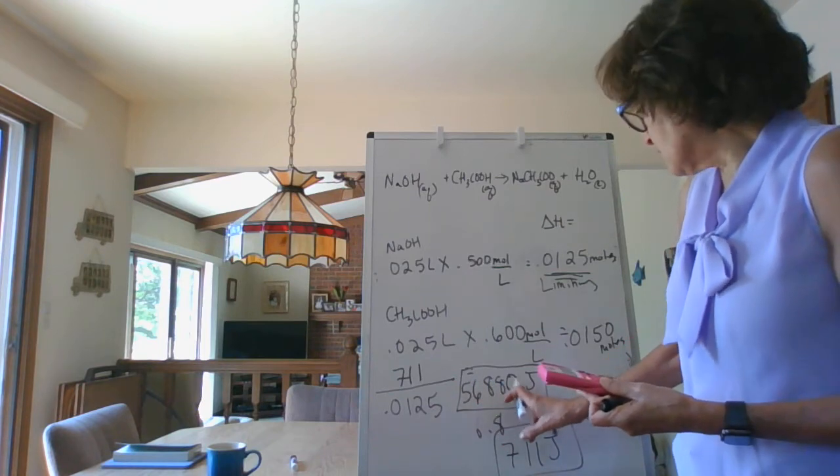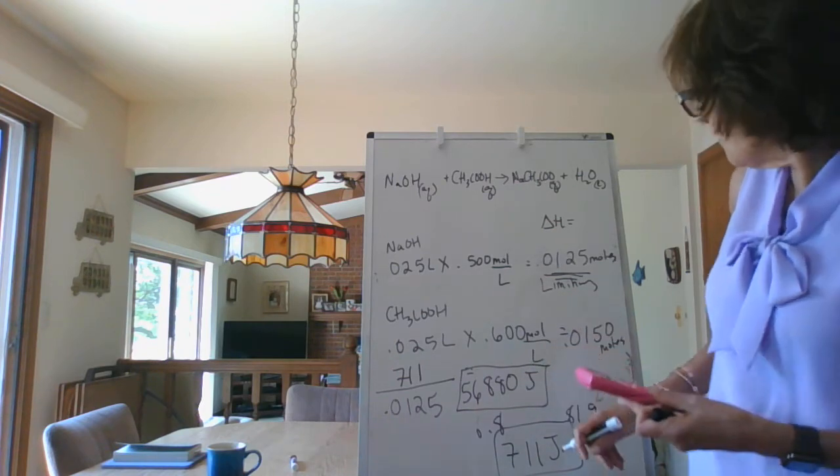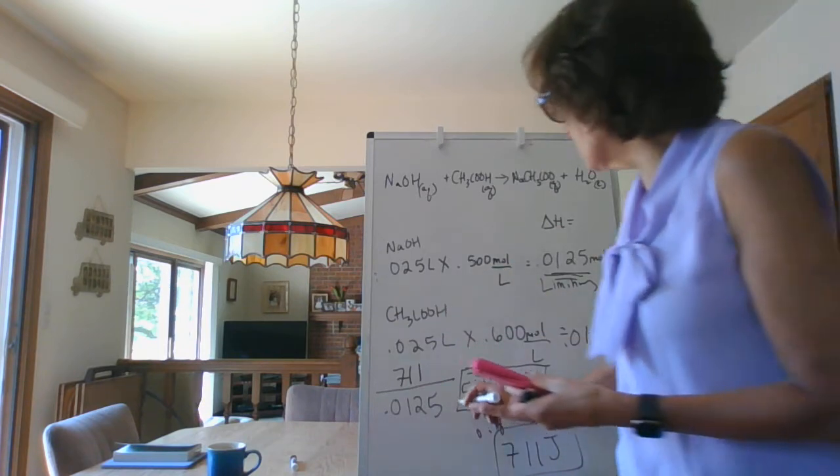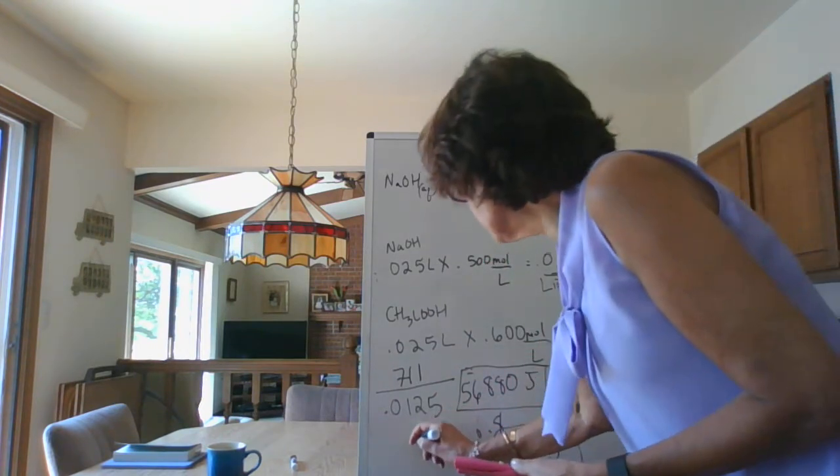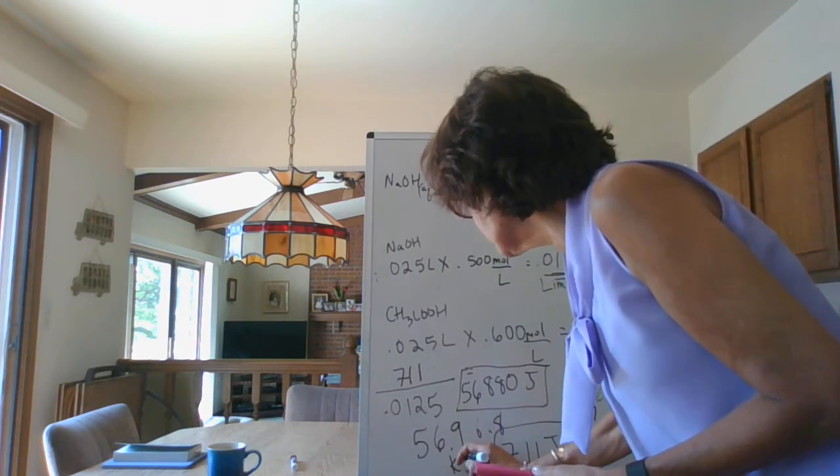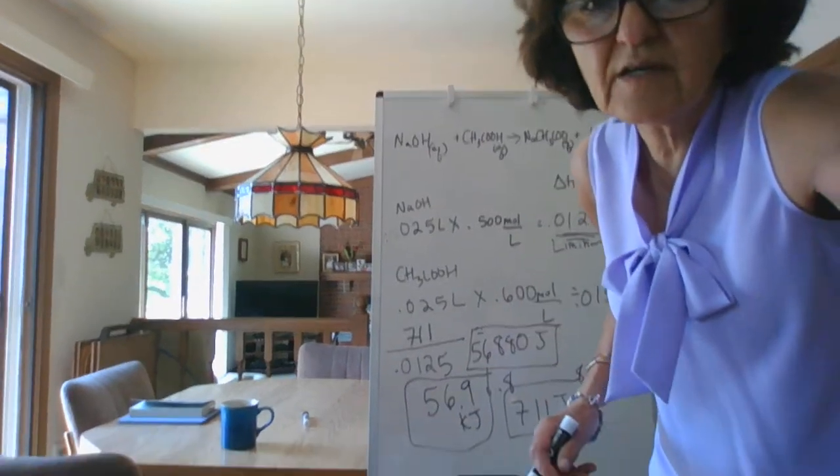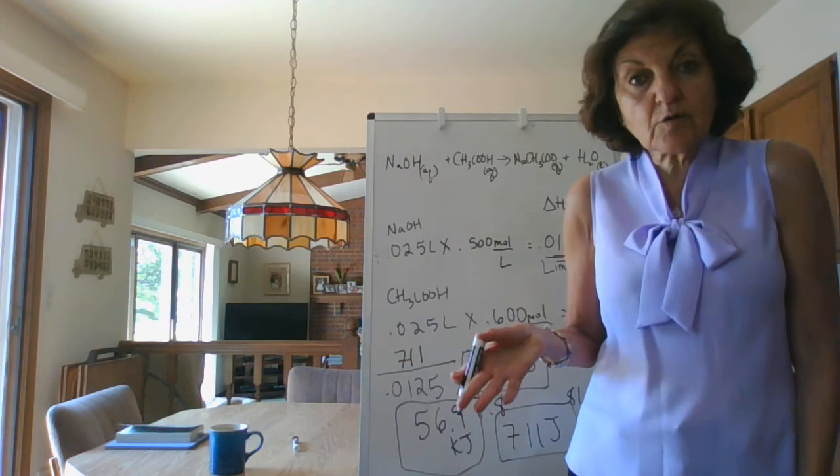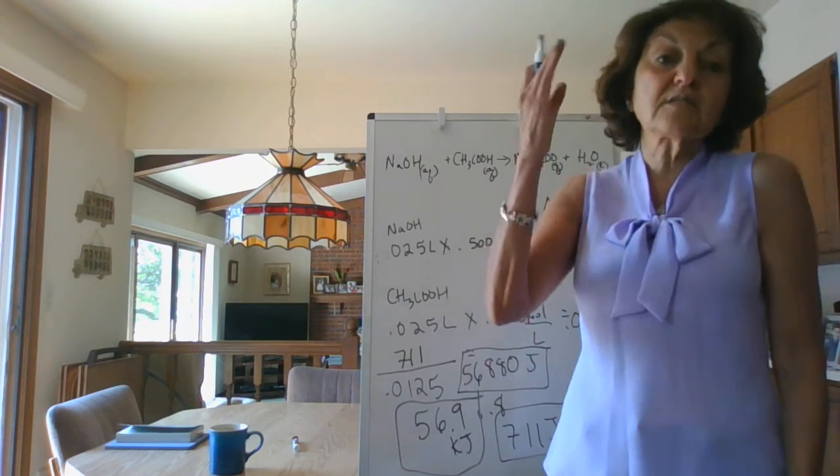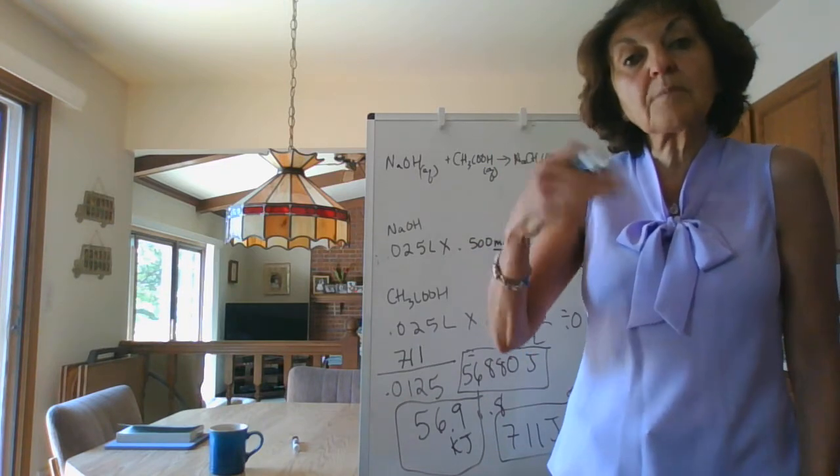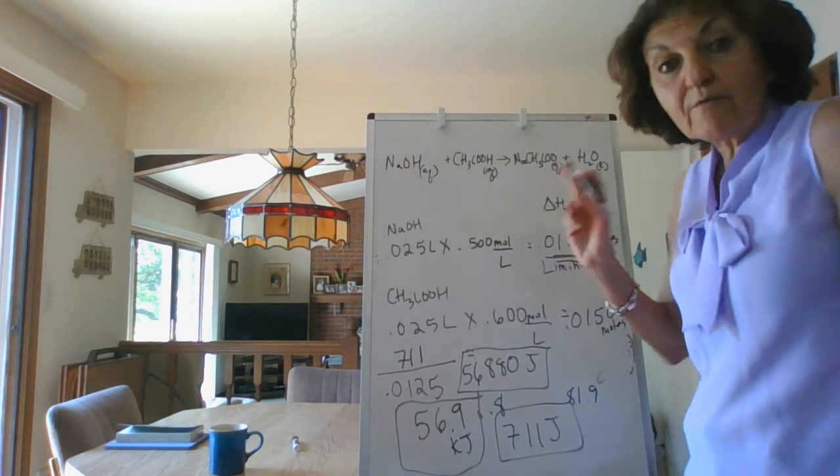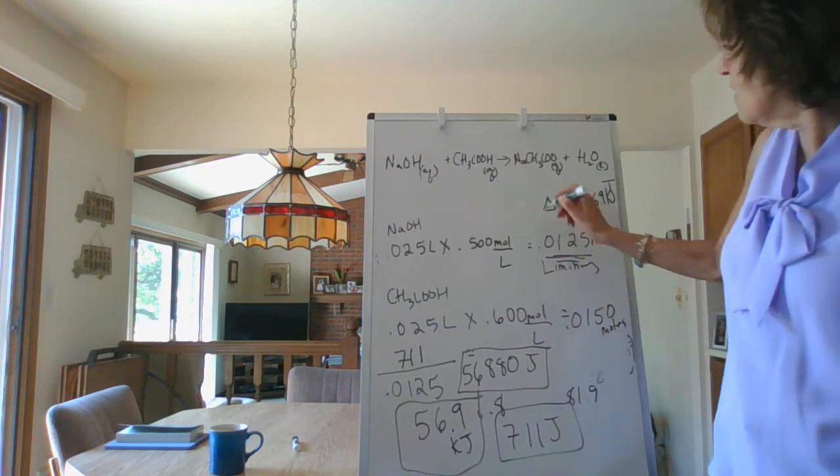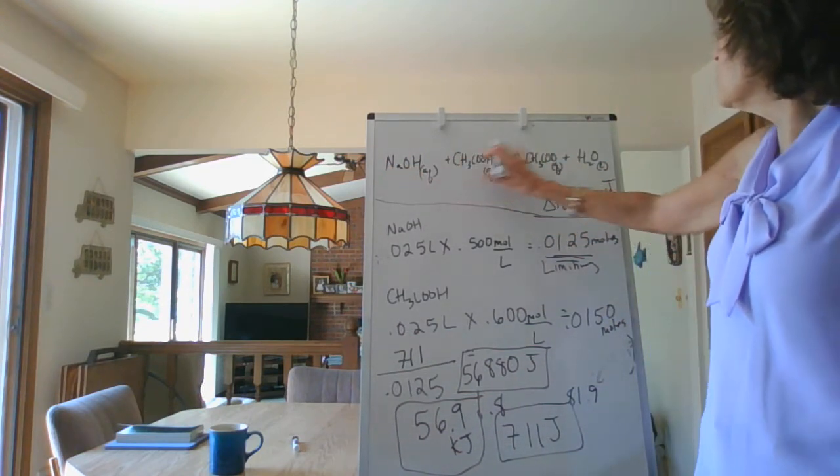Normally in thermochemical equations the delta H is in kilojoules, so we're going to switch this to kilojoules. Move the decimal three places: 56.80. Let's round it to three sig figs, so it's going to be 56.9 kilojoules. Now I need to put it over here. Was this an exothermic reaction or endothermic? Obviously it was exothermic - how did you know that? Because the temperature went up. Anytime the temperature goes up, it's an exothermic reaction, so we have to put a negative. So we're going to write negative 56.9 kilojoules. There's your thermochemical equation, there's your molar heat of neutralization.